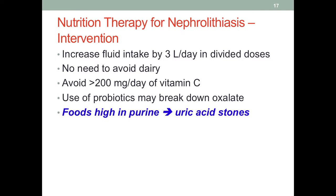If the patient takes a vitamin C supplement, they should not take more than 200 milligrams per day — that's already 200% of the recommended intake level. Vitamin C is ascorbic acid; therefore, intact vitamin C in the urine could reduce the urinary pH value, which again favors stone development.